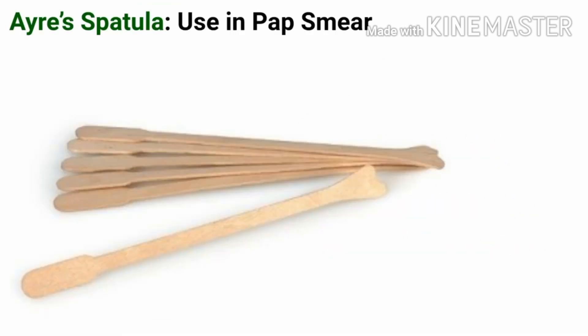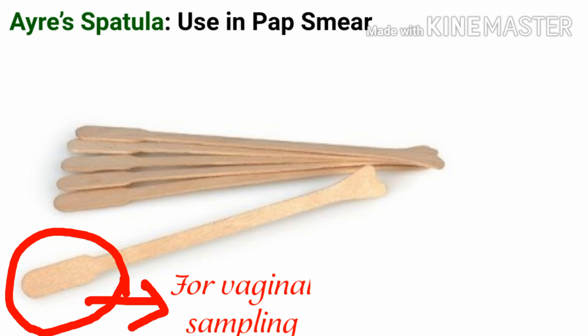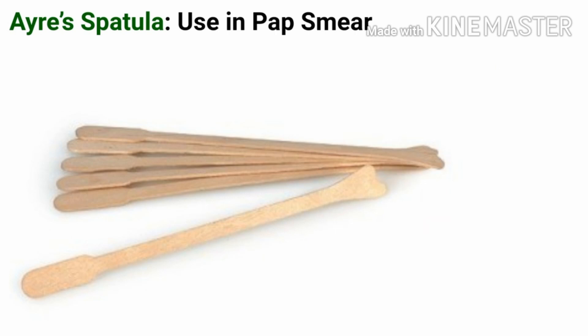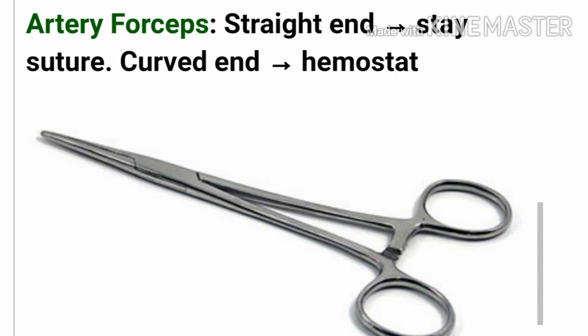Our next instrument is the Ayre's spatula. It is a device used in pap smear. As you can see, it is a wooden spatula with a U-shaped opening on one side and a flat surface on the other side. Its broad end is for vaginal sample collection and the narrow end is for cervical sample collection.